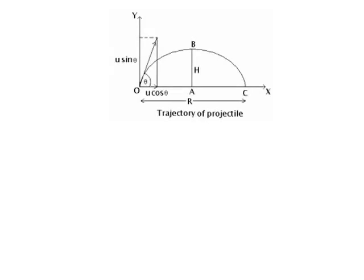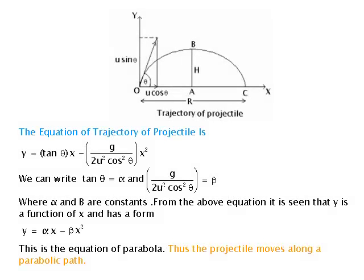The equation of the trajectory of the projectile is: y = tan θ · x − (g / 2u²cos²θ) · x². Writing tan θ = α and g/(2u²cos²θ) = β, where α and β are constants, the equation becomes y = αx − βx². This is the equation of a parabola, and thus the projectile moves along a parabolic path.